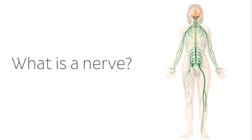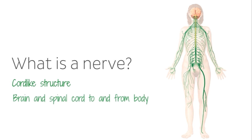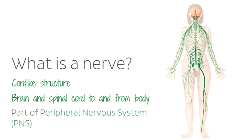A nerve is a cord-like structure that conveys information and impulses from cell bodies in the brain and spinal cord to and from the peripheral body. They are considered to be part of the peripheral nervous system, or the PNS, which you can see highlighted in green on the image on the right.